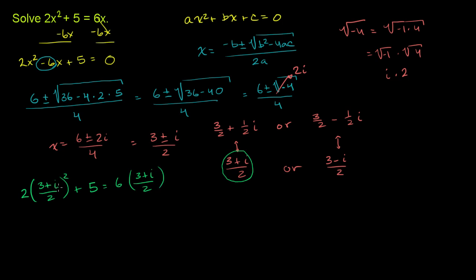Let's square 3 plus i. That's 3 squared, which is 9, plus 2 times the product of 3 and i, giving 6i, plus i squared, which is negative 1. So 3 plus i squared equals 9 plus 6i minus 1.